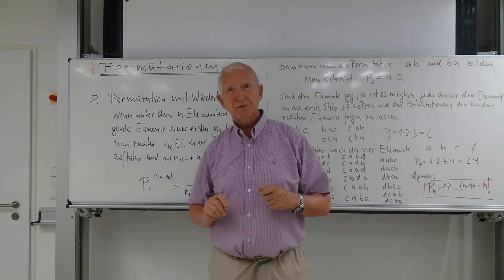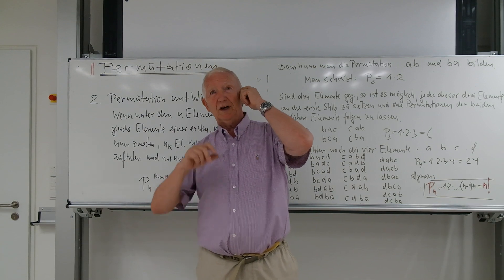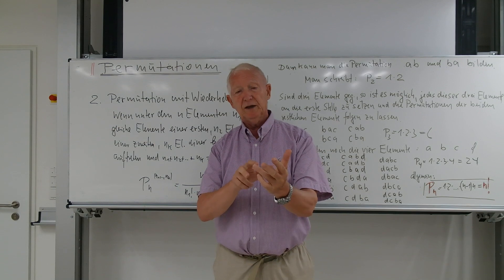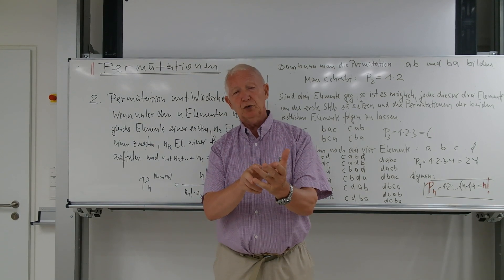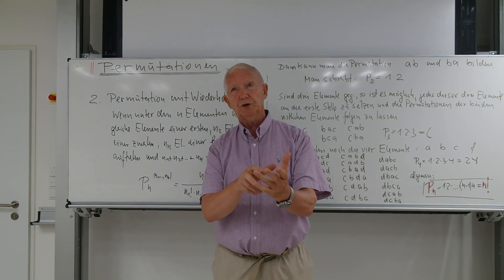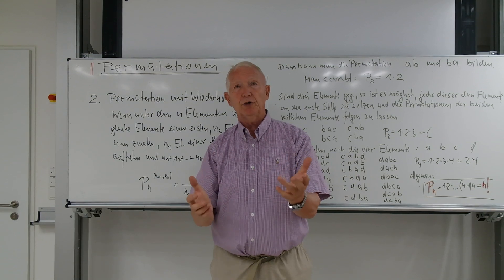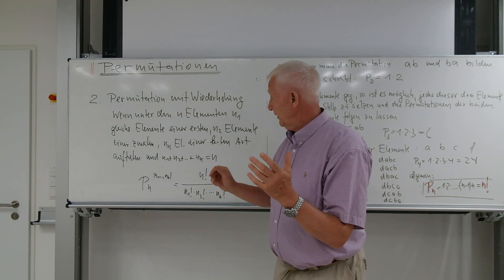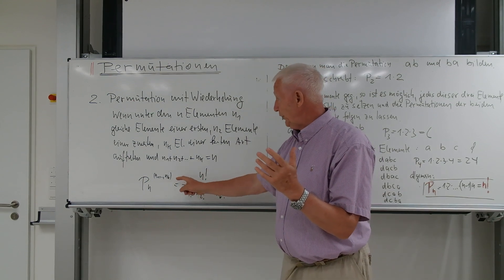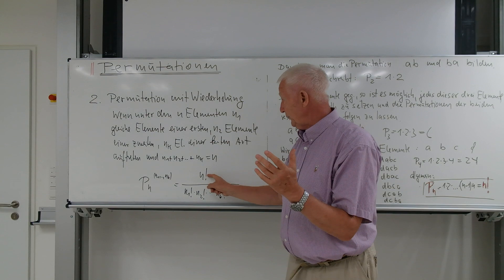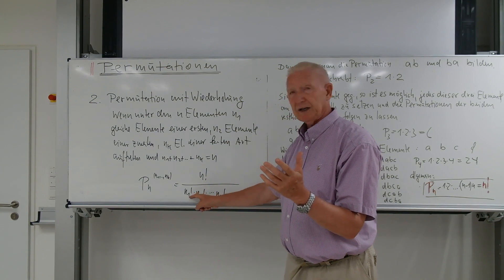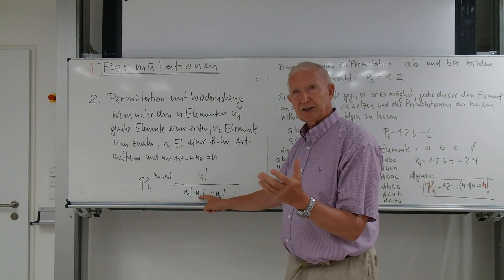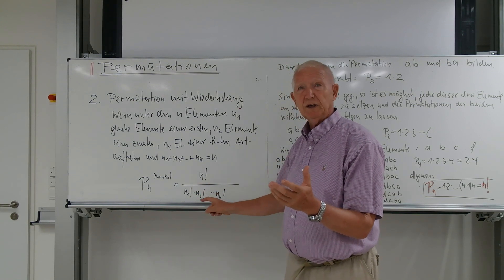Jetzt könnte es aber sein, dass Sophia auch eine Kette hat. Da sind 3 rote dabei, 4 grüne, das sind schon 7, und dann nochmal 3 blaue. Das heißt, dann gibt es eine Anordnung von auch wieder 10 Fakultät, aber jetzt haben wir einmal 3 Fakultät für die 3 gleichen, dann 4 Fakultät für die 4 gleichen und nochmal 3 Fakultät für die 3 gleichen. Dann müsste ich das dadurch dividieren.